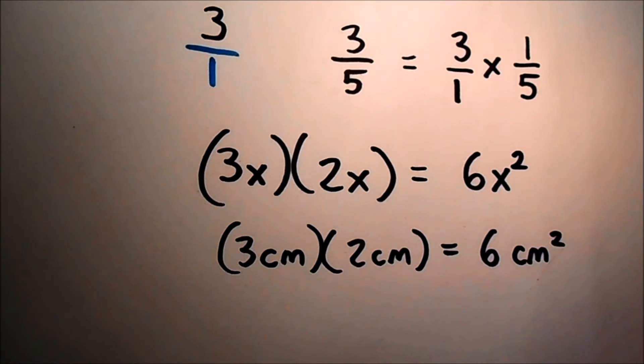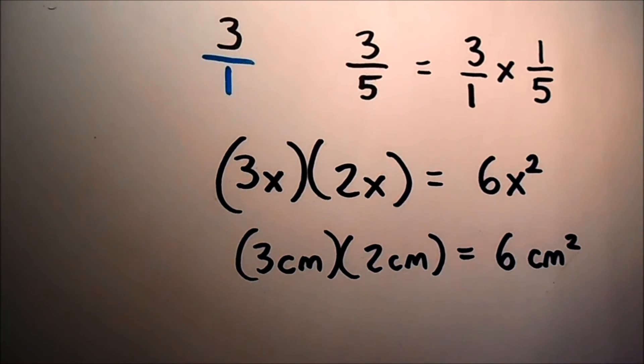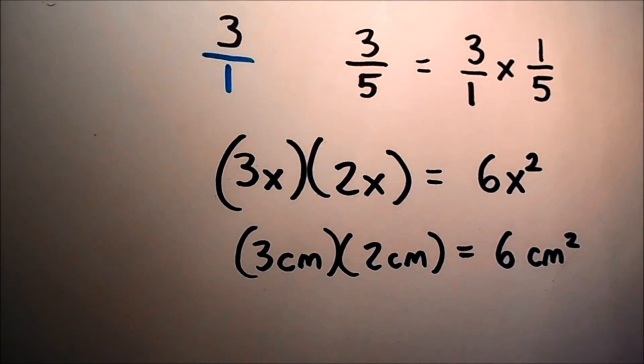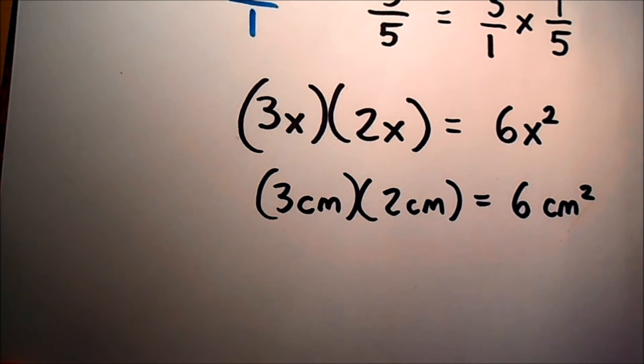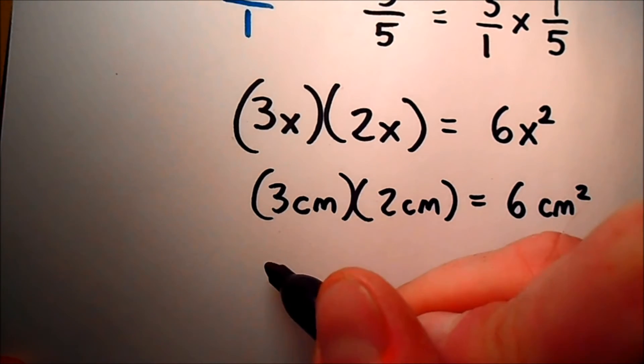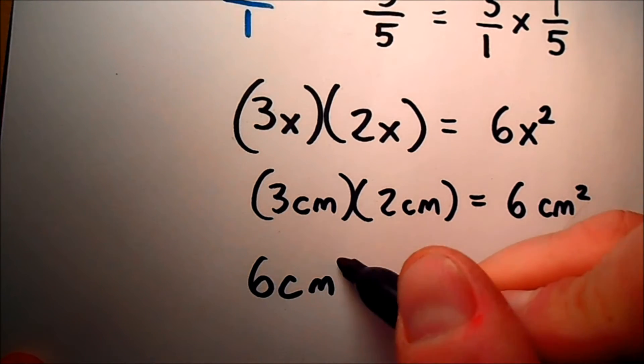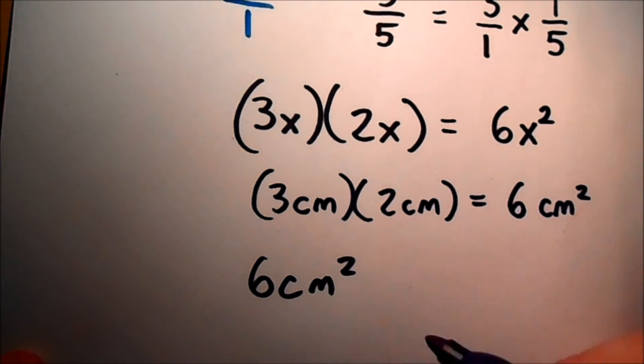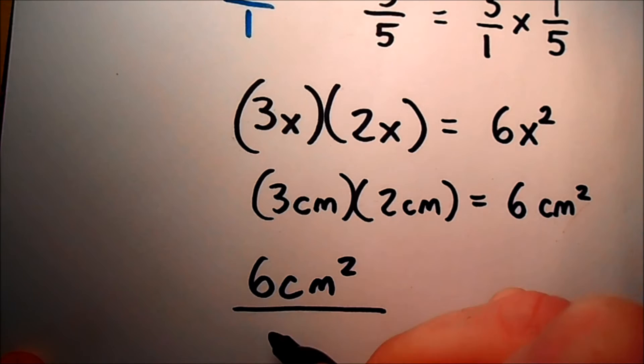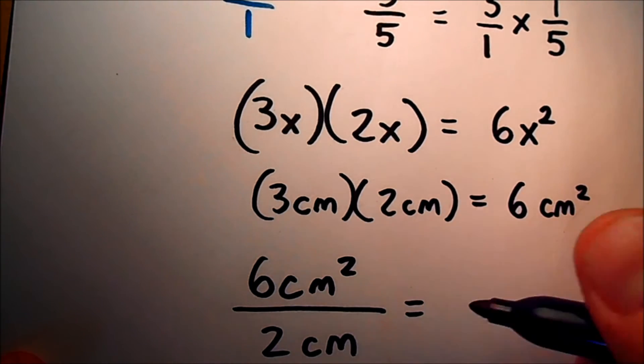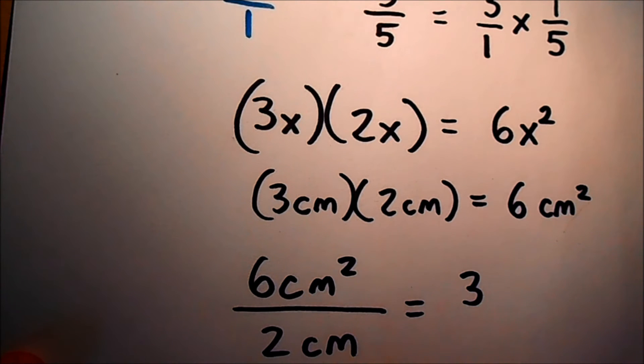Well not only can units be multiplied together, they can also be canceled out the same way that we might cancel out algebraic variables. If, for example, I have my 6 centimeters squared, and I divide that by 2 centimeters, you can see I'll already get back to my 3. 6 divided by 2 is equal to 3, but also my centimeters squared really means centimeters times centimeters, and I'm dividing by centimeters.